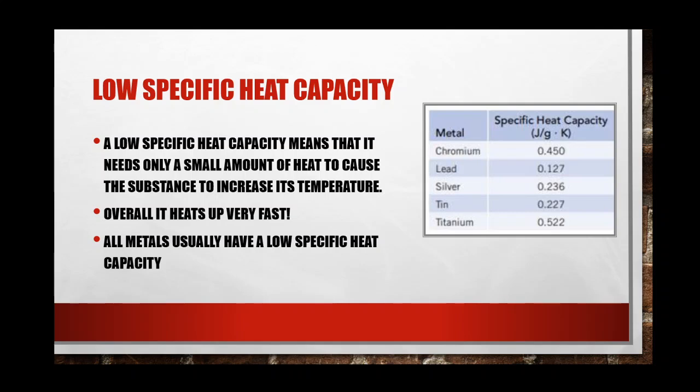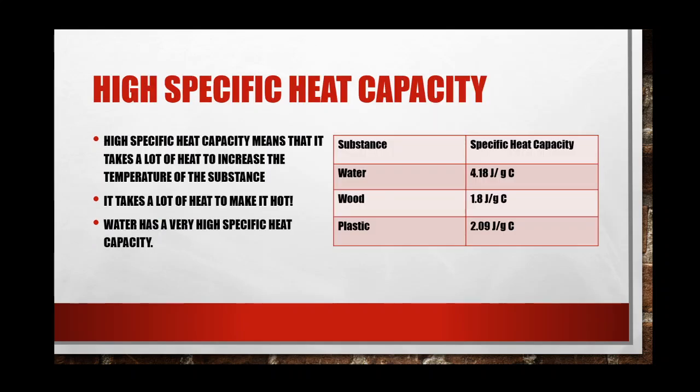We usually see low specific heat with metals, and of course metals make up a lot of our periodic table. So metals have a very low specific heat capacity — they heat up very fast.